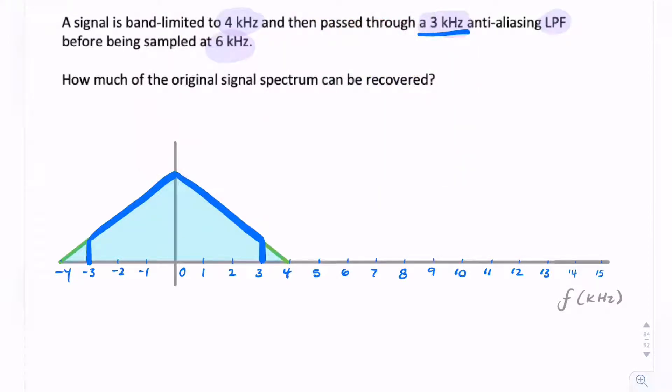The remainder, from 3 to 4 kHz, is removed by the low-pass filter. So this is the output of the low-pass filter. This is all before sampling.